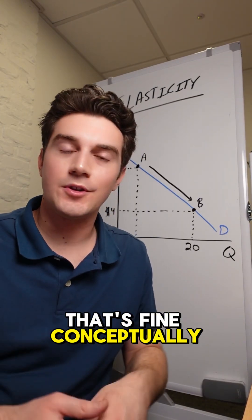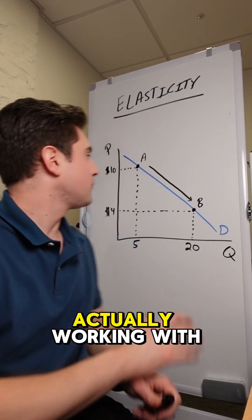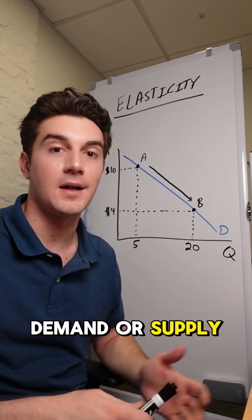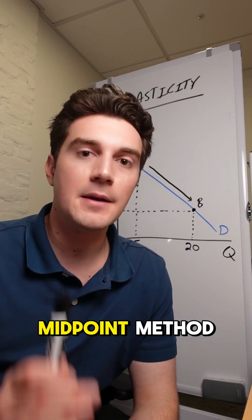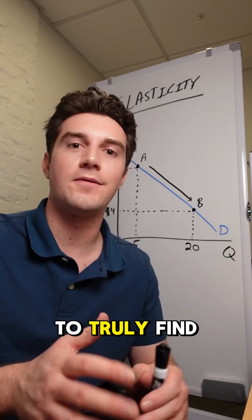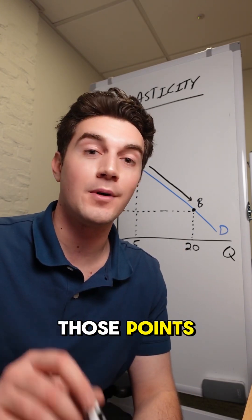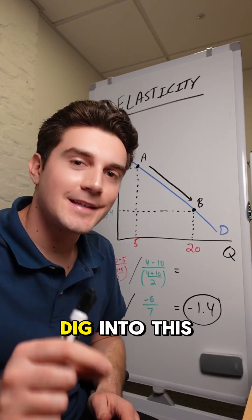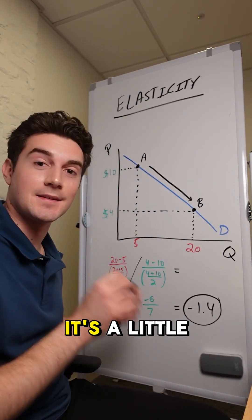That's fine conceptually or theoretically, but when we're actually working with two different points that we're moving between on the demand or supply curve, we've got to lean into the midpoint method to truly find the elasticity between those points, holding differences of scale and quantity and price constant. I'm not going to dig into this too in depth in this video because it's a little bit advanced.